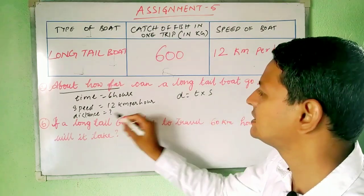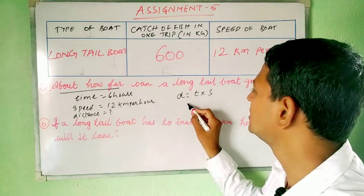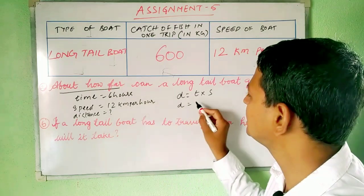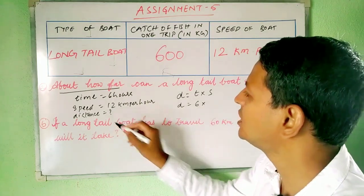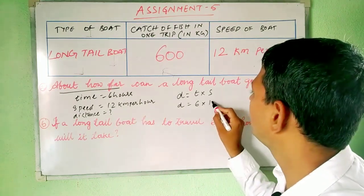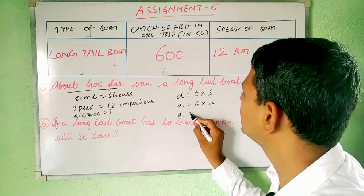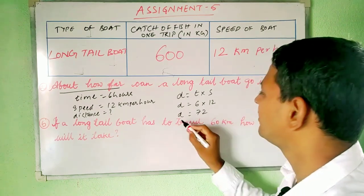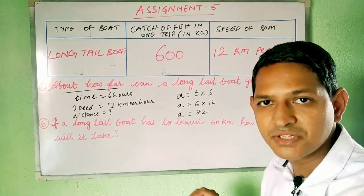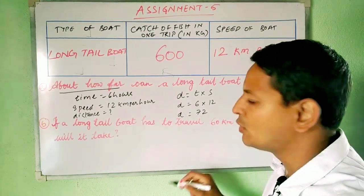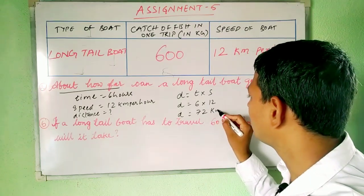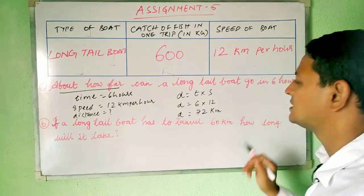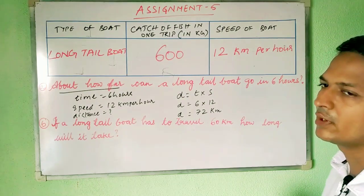So here distance is asked. Distance is equal to time, which is 6 hours, multiplied by speed, which is 12. So 6 times 12 gives distance equal to 72. And distance is always measured in kilometers, so it is 72 kilometers. The answer for the first question is distance is 72 kilometers.